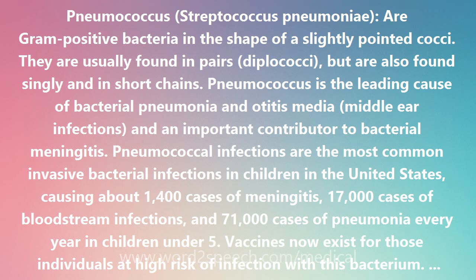Pneumococcus is the leading cause of bacterial pneumonia and otitis media and an important contributor to bacterial meningitis. Pneumococcal infections are the most common invasive bacterial infections in children in the United States, causing about 1,400 cases of meningitis, 17,000 cases of bloodstream infections, and 71,000 cases of pneumonia every year in children under 5. Vaccines now exist for those individuals at high risk of infection with this bacterium.